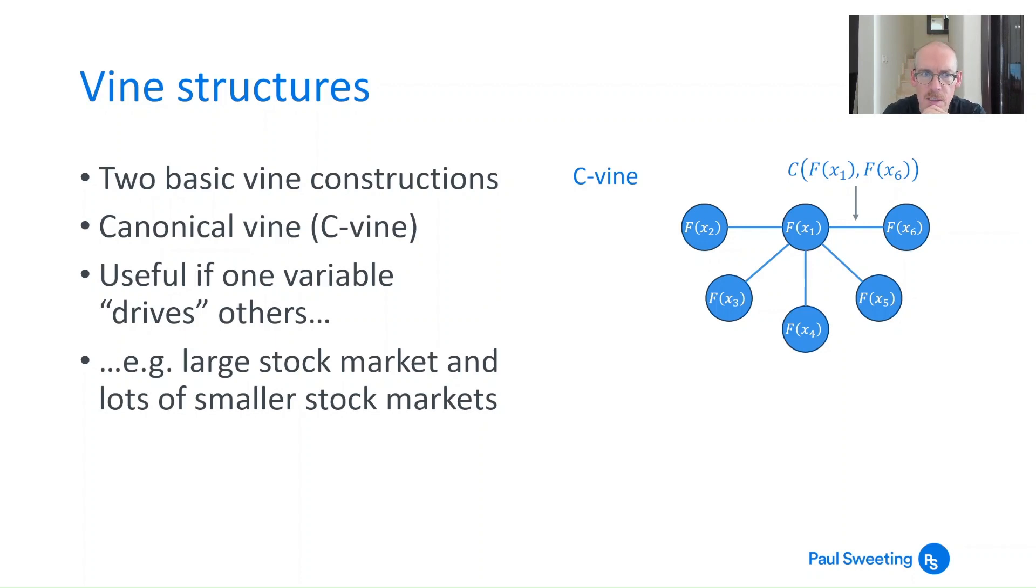In terms of vine structures there are two basic fundamental vine constructions that exist. The first is known as a canonical vine or a C-vine. And this is where you've got one node at the center and then all the other nodes are connected to that single node by edges. This is useful if you've got one variable driving or highly correlated to all of the other nodes. So if for example you're looking at one large stock market and lots of smaller stock markets that are geographically close then yeah a C-vine might be a good model for that.